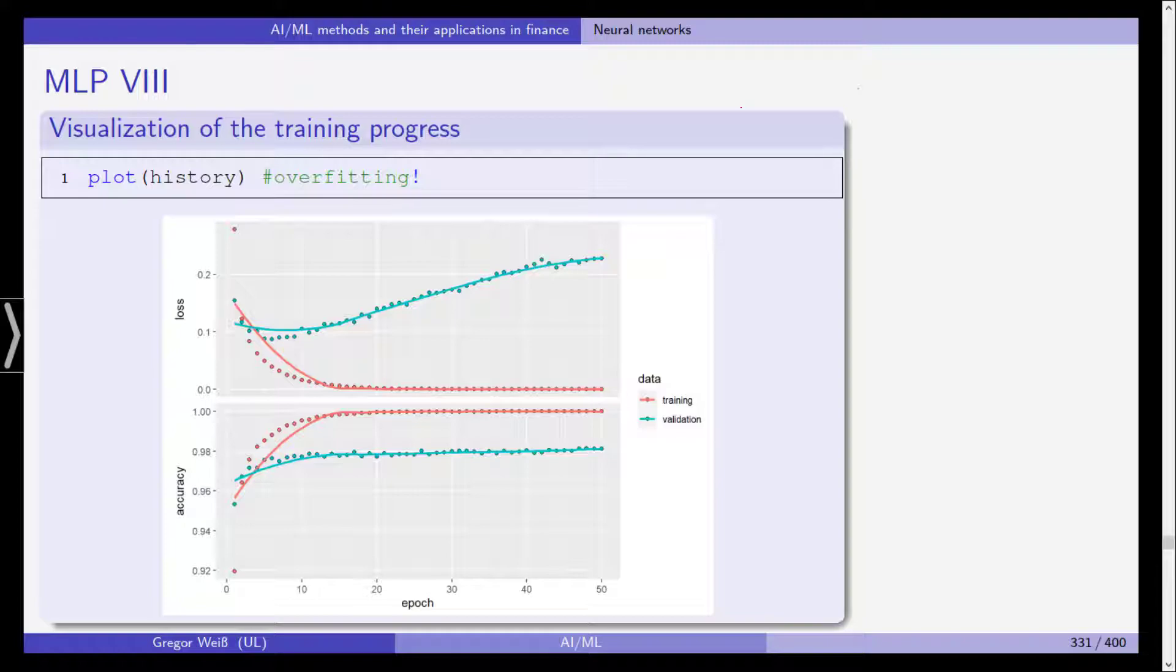We haven't talked about the accuracy and actually overfitting. If we plot the history of the model over the different 50 epochs, you can see here in green or turquoise the loss and accuracy for the validation set and in orange the loss and accuracy for the training set. The accuracy is actually extremely high.